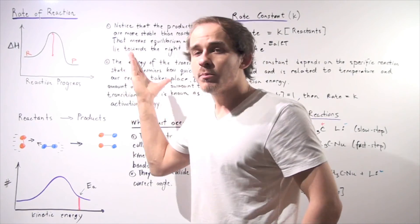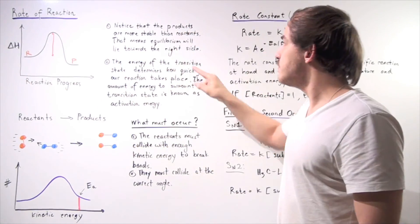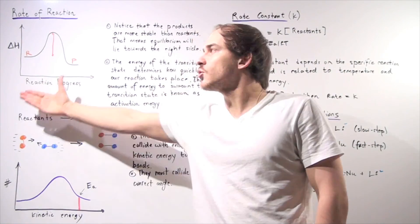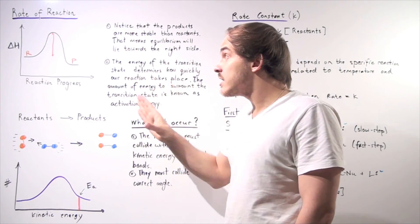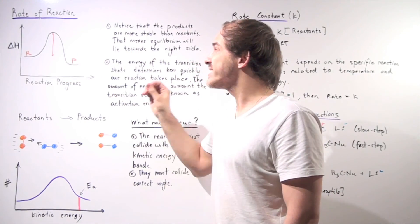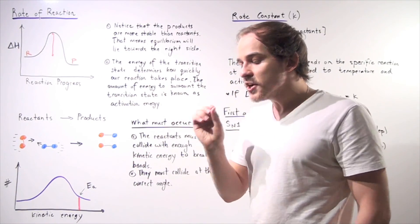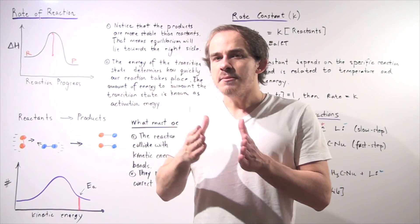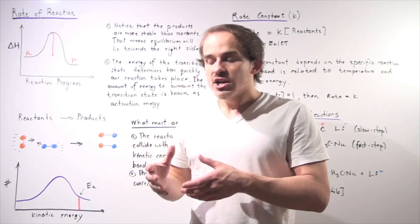Because our products are more stable than reactants, that means equilibrium will lie towards the right side, towards the product side. So a very important point must be made: equilibrium is not the same thing as rate.